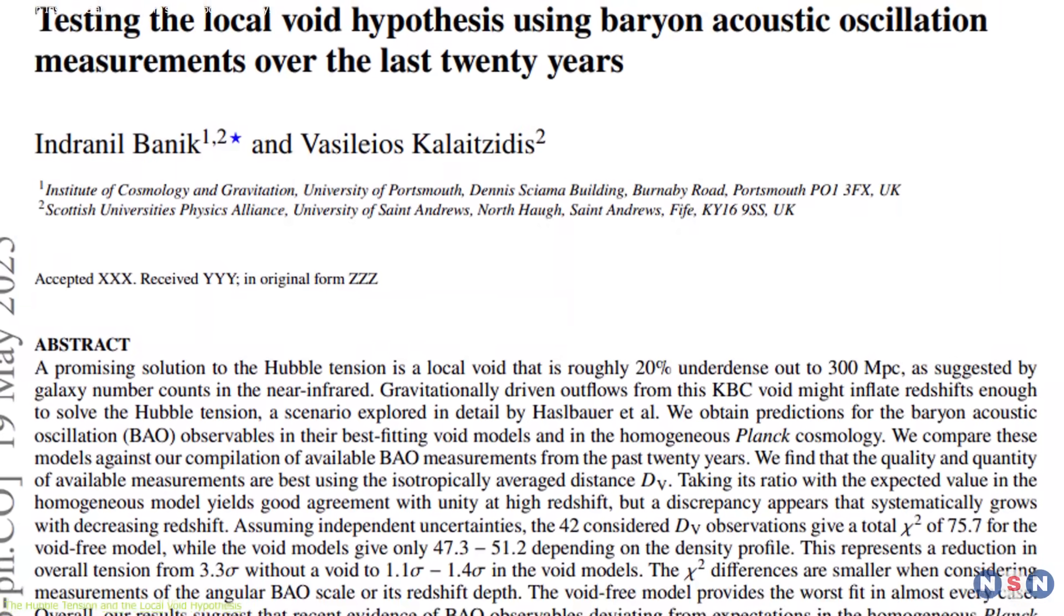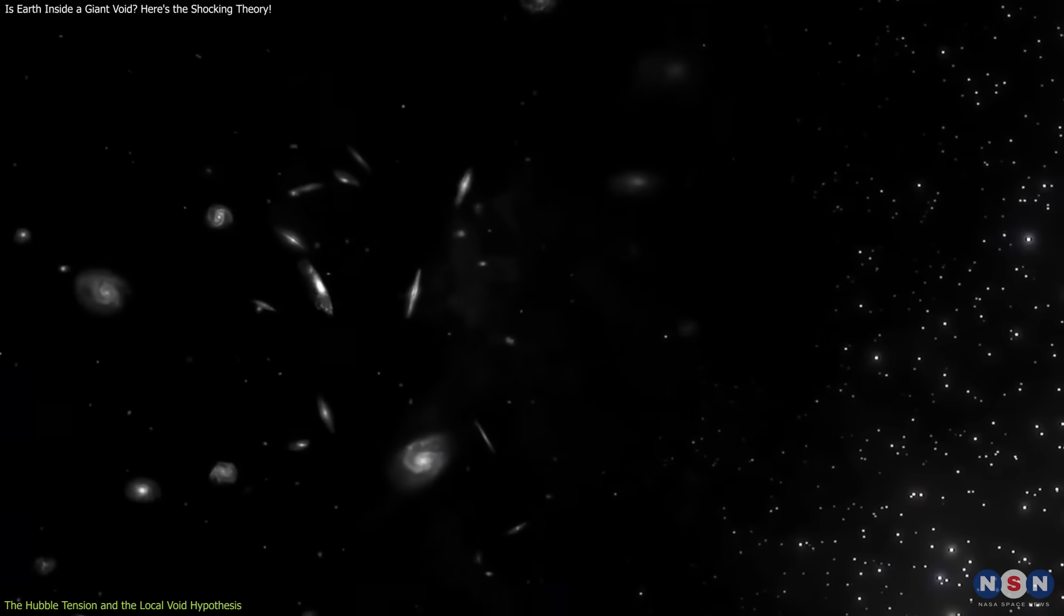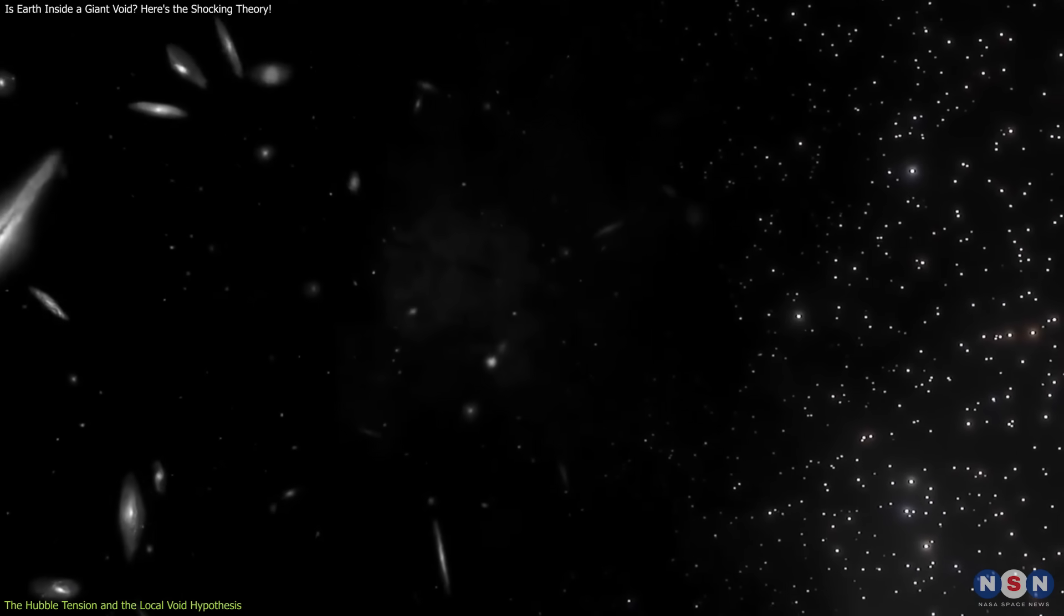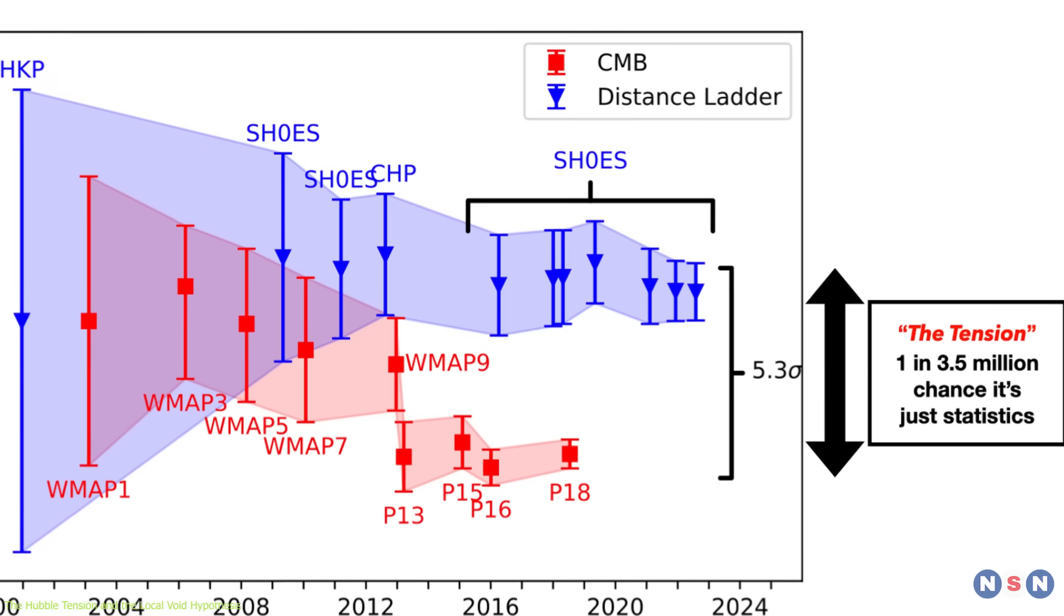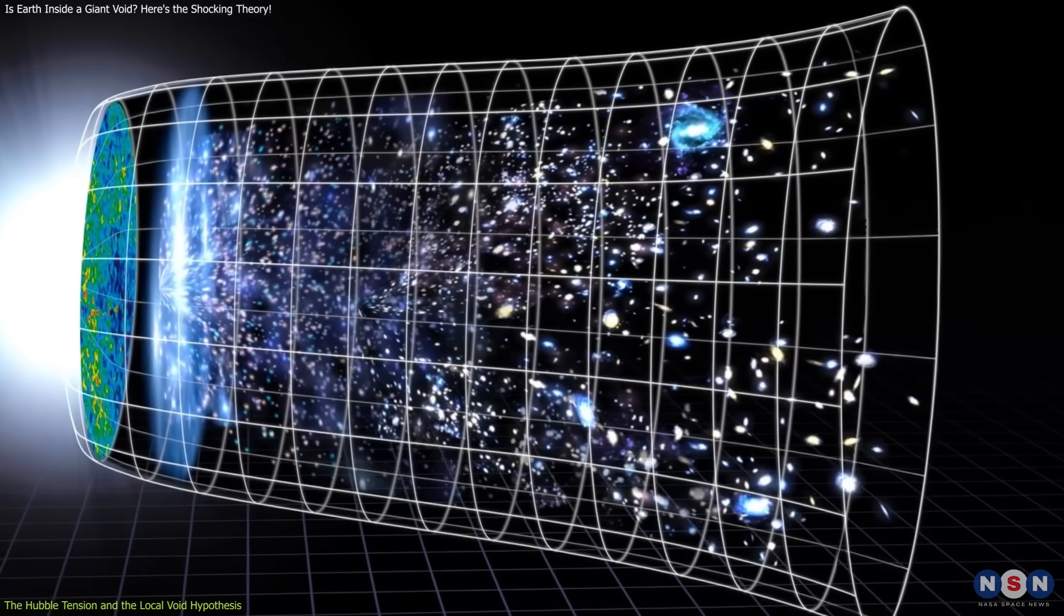Dr. Indra Nilbanek and his team propose that Earth lies in a giant cosmic void, where galaxies appear to move away faster due to surrounding dense regions pulling matter outward. This creates an illusion of a higher local expansion rate, offering a possible solution to the Hubble tension and challenging the idea that the universe expands uniformly.